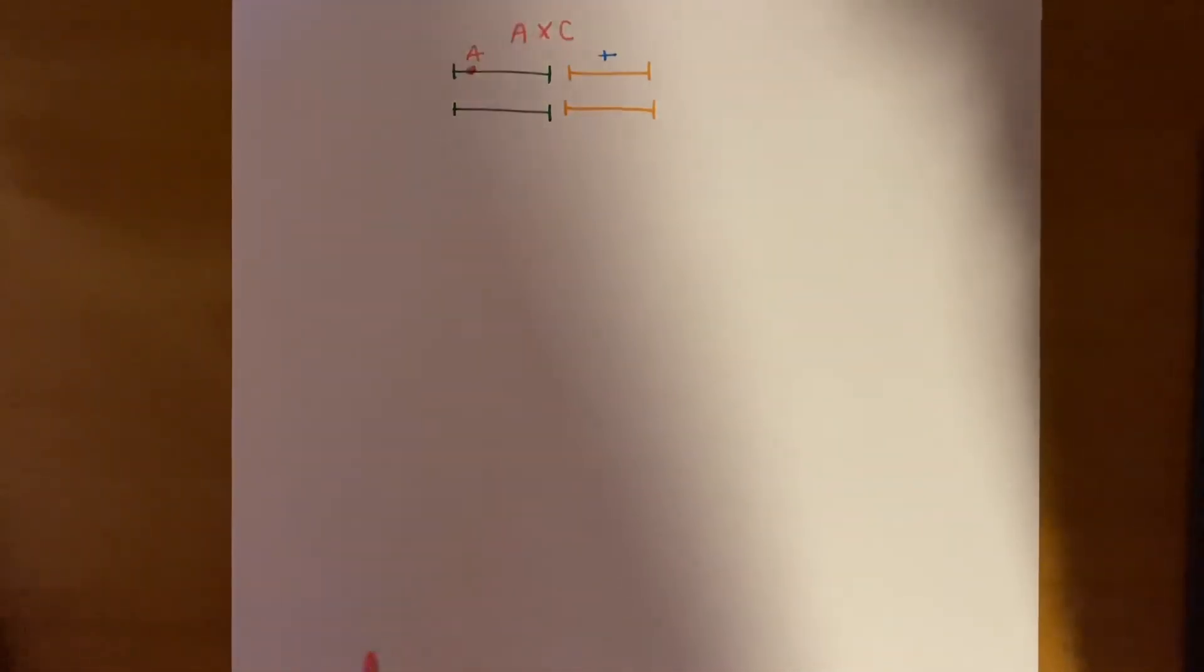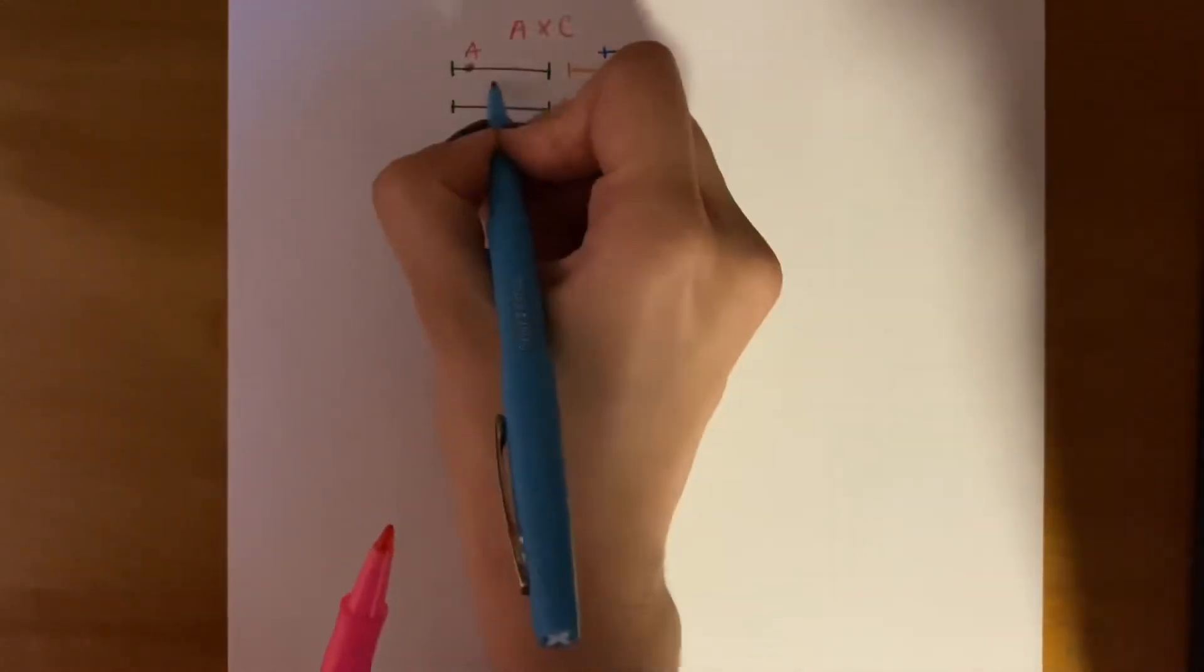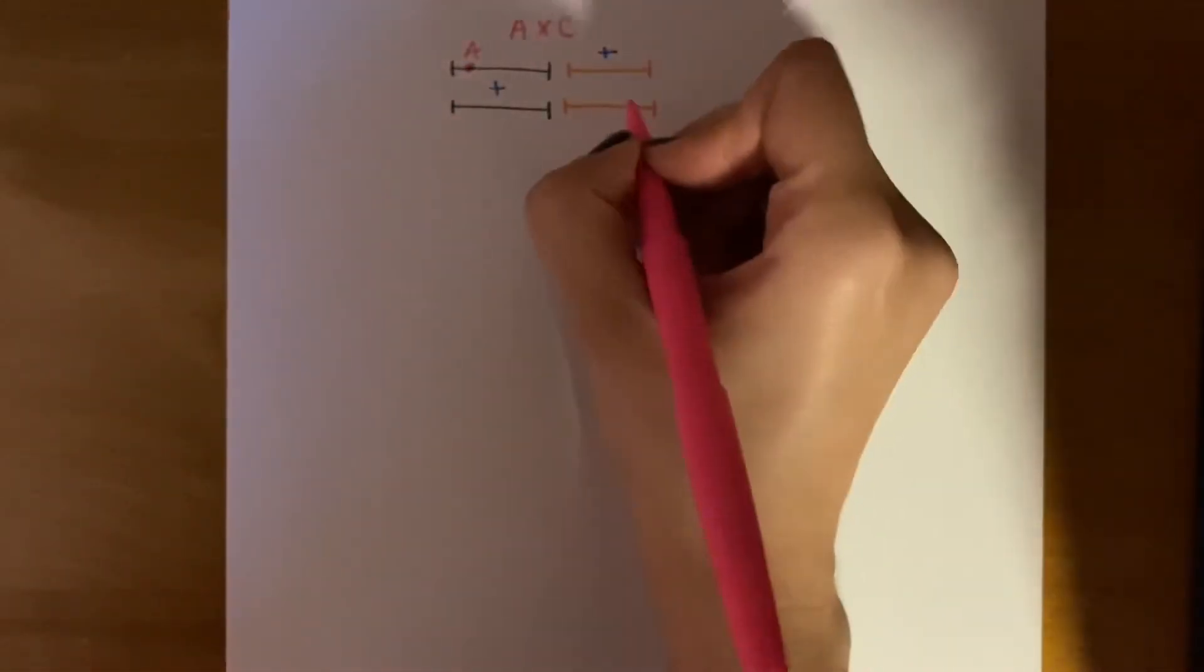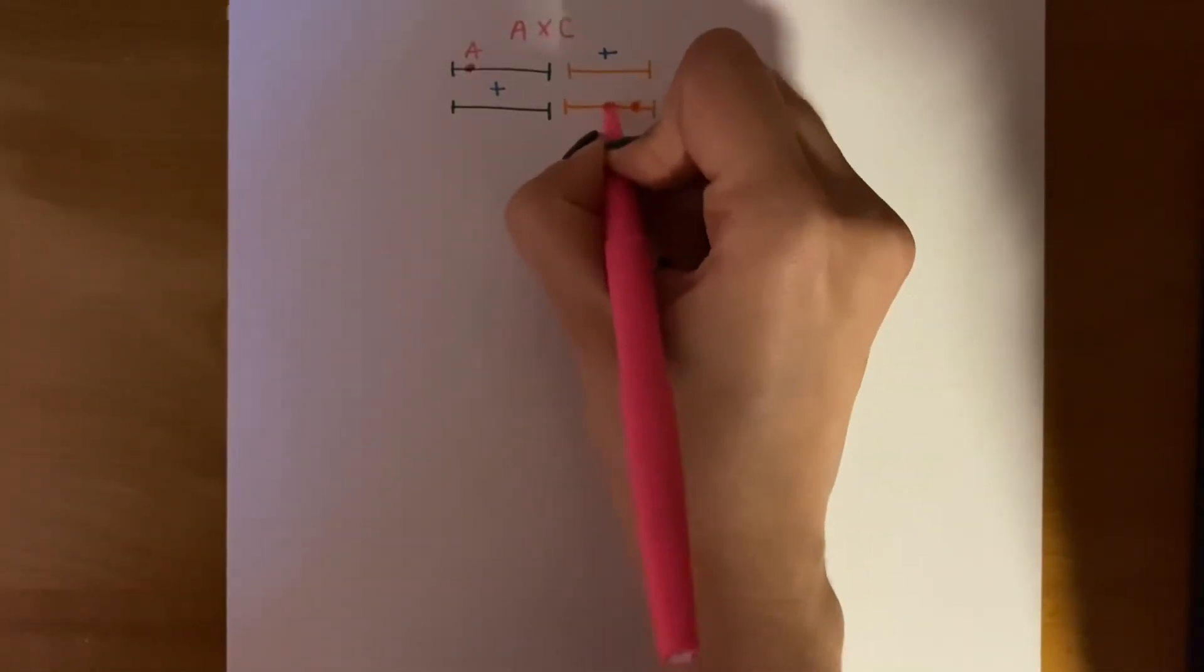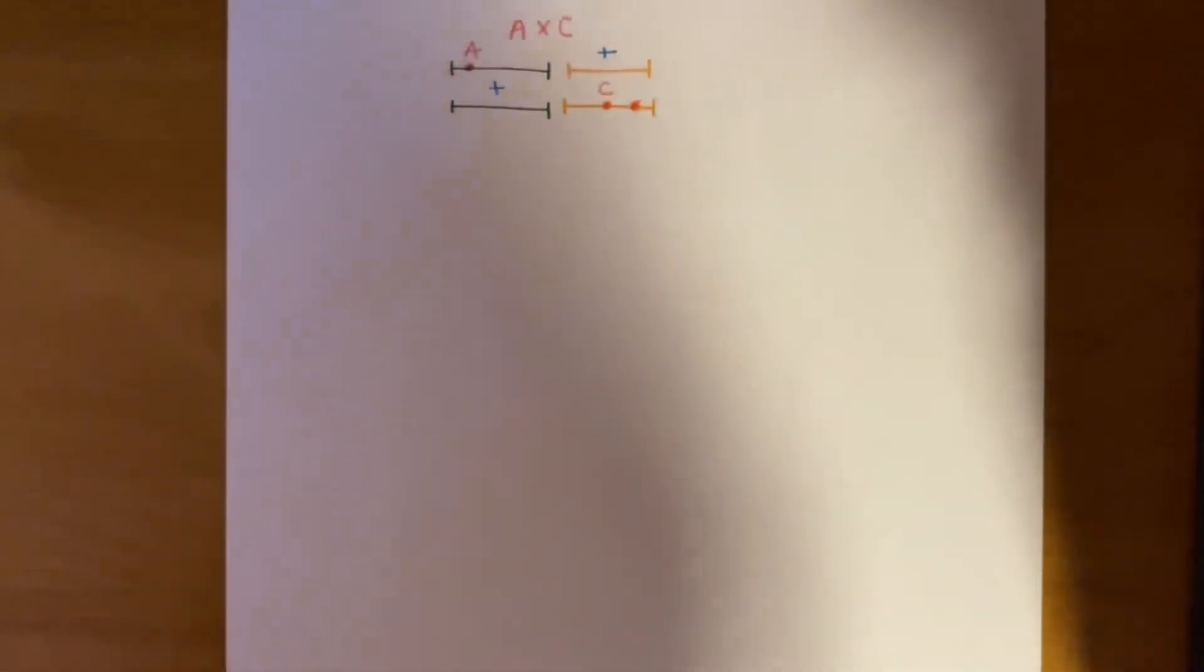And we do the same for C. So, we would take one allele from the W1 gene from C, which was the plus wild-type, and we do the W2 gene as well. Oh, sorry, it was in the center. From the W2 gene.